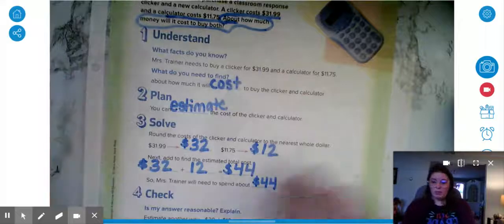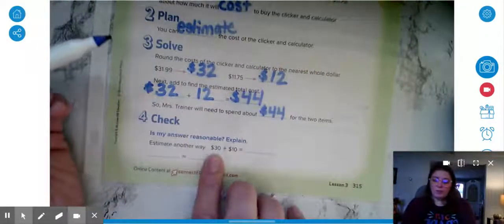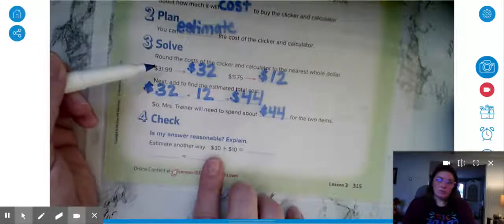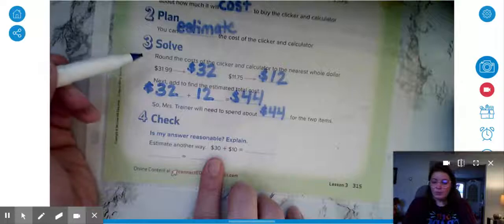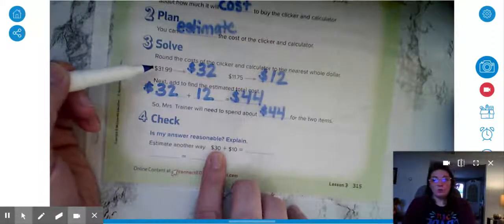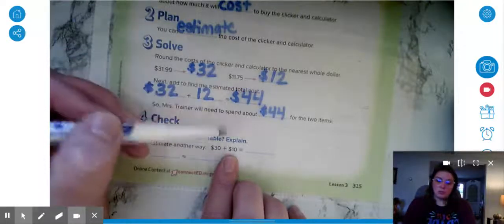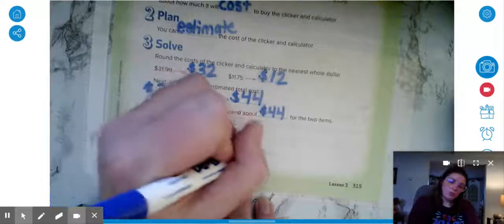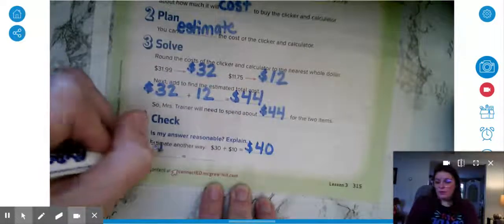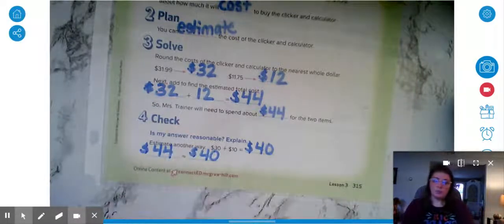I can check my answer by estimating in a different way. So we could have rounded the amounts to the nearest tens place instead of the nearest dollar or whole. So $31.99 is also close to $30, and $11.75 is also close to $10. So another estimate can be $40. $44 is close to $40, so our answer is reasonable.